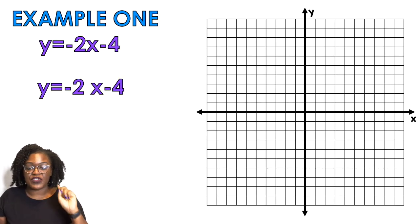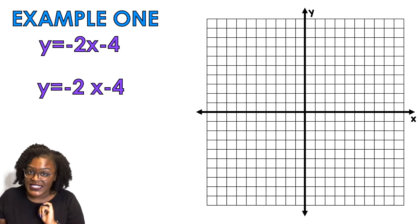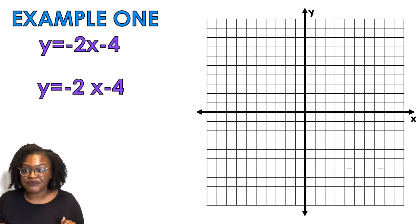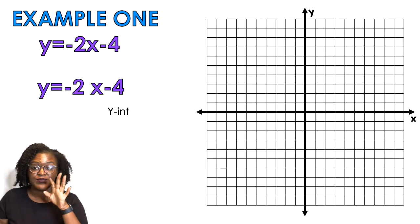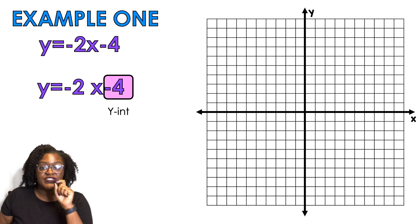Example number one. This is your equation. You need to decide, first you need to isolate y. Y is already isolated, praise him. What's y intercept? Negative four, right. What is your slope?